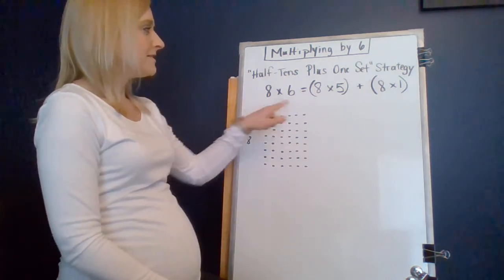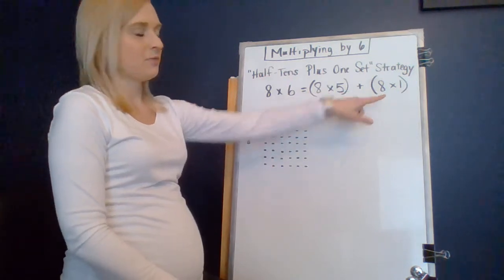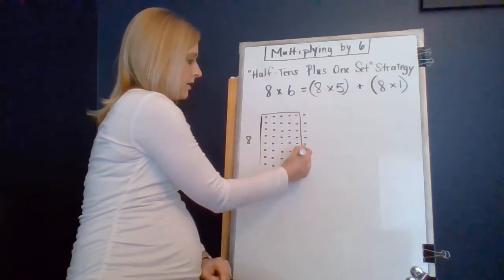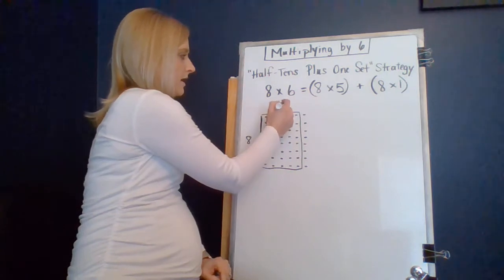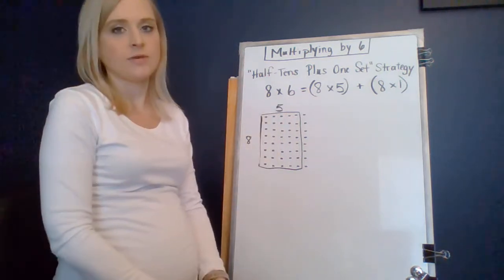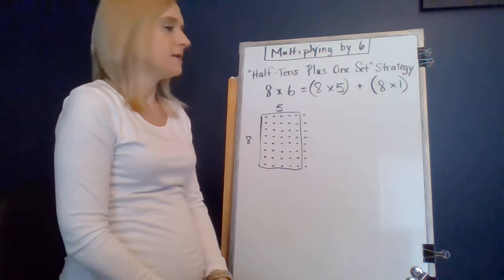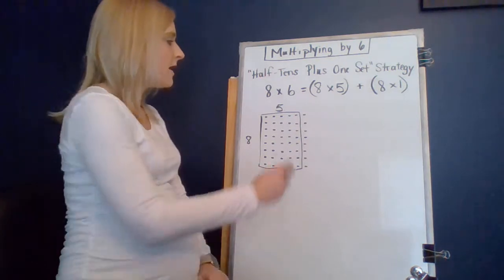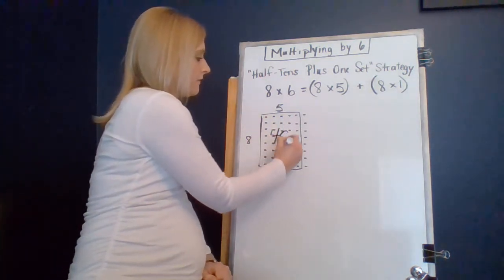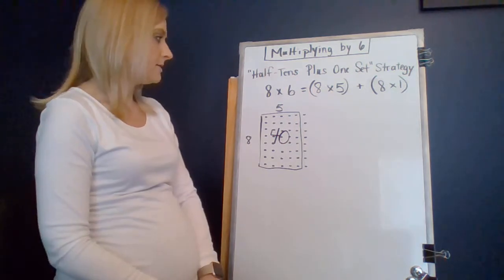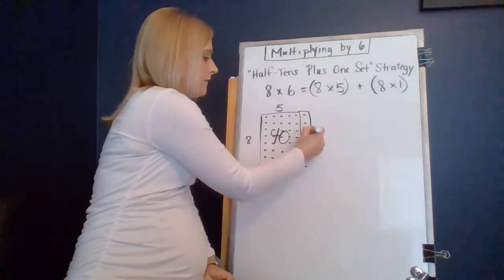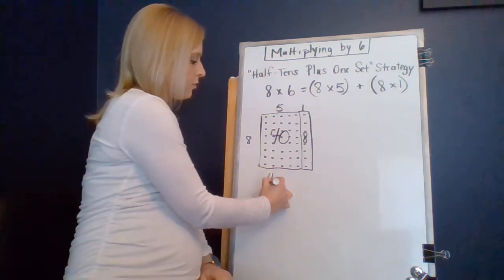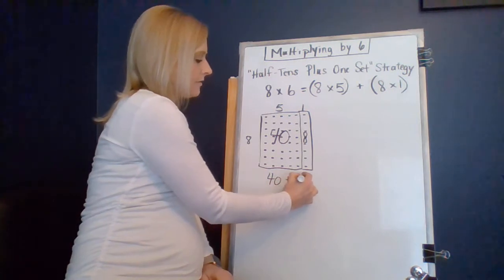8 times 6 is the same as 8 times 5 plus another group of 8. What that looks like here in our array, I'm going to kind of block it off to look more like the area model. Basically, we're finding 8 times 5 first. We know that multiplying things by 5 is a lot more simple, and we can skip count by 5 pretty quickly and effectively. So, 8 times 5 is 40. We have 40 of those little dots in that array right there. Then we add one more set of 8, and we have 8 in there.